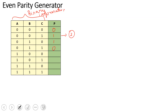Similarly, for 100: the number of 1s is 1, which is odd. Adding the parity bit of 1 gives 2 ones total, which is even — so parity bit is 1. For the next case, the number of 1s is 1, again odd, so parity bit is 1. For 111, the number of 1s is 3 — that is an odd number — so parity bit is 1.